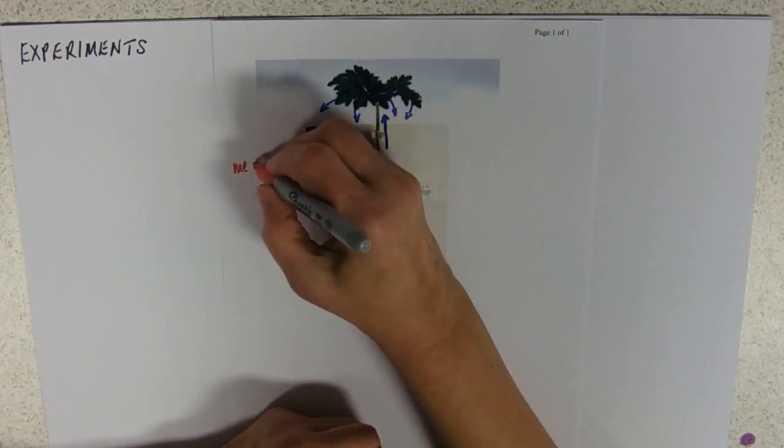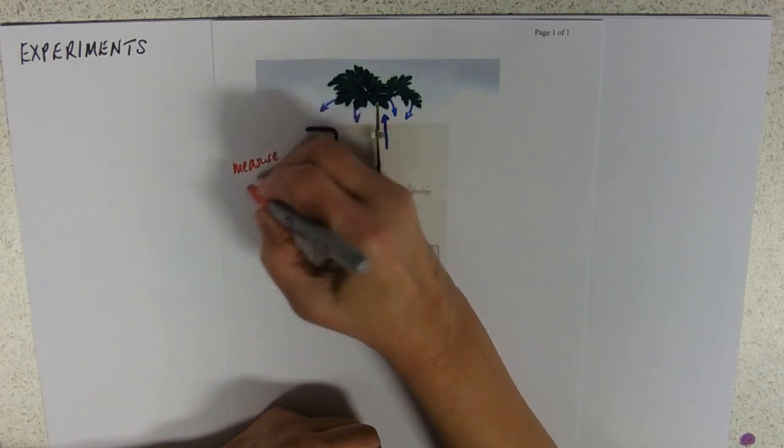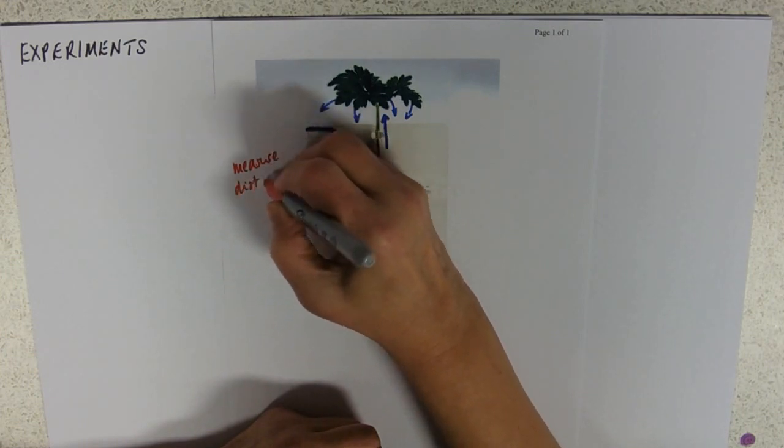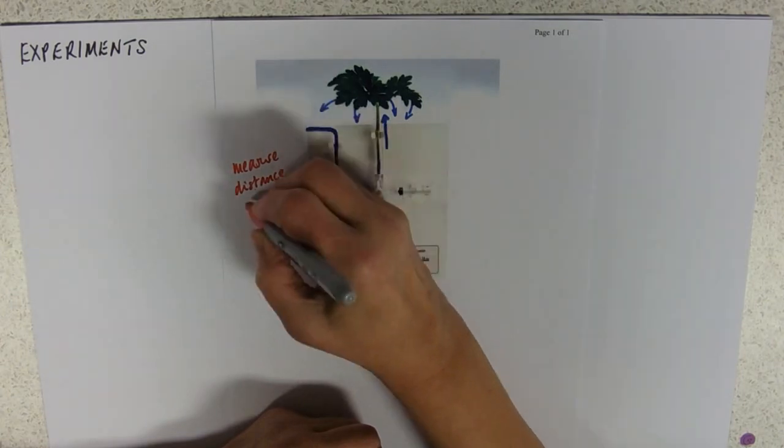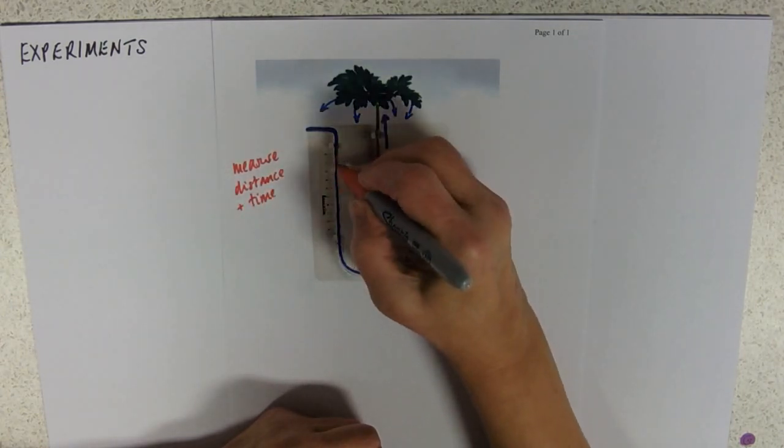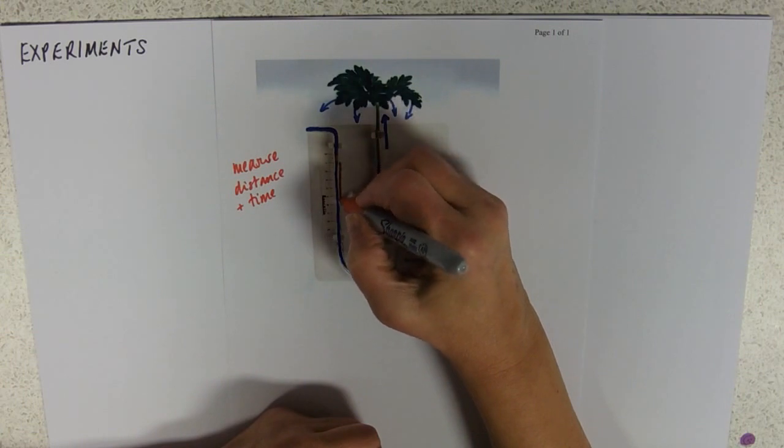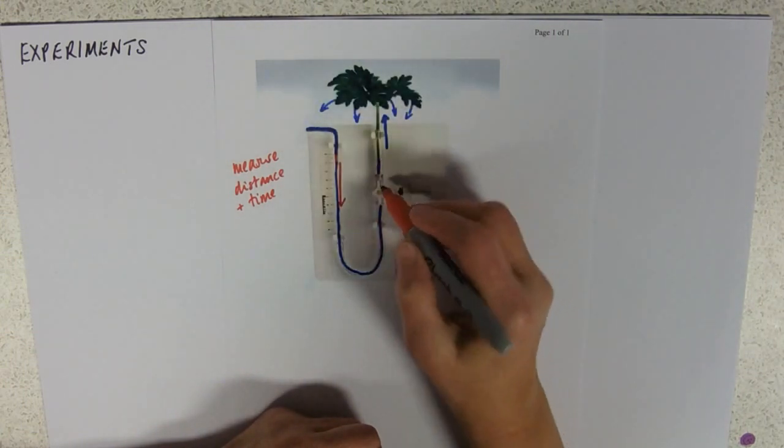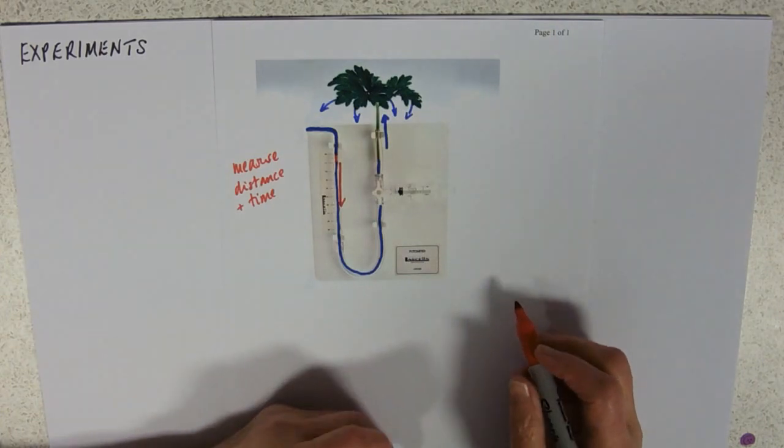And you can then measure, what you measure is the distance and the time taken for it to travel. So, the air bubble is going to move down that scale as this plant pulls water up through.